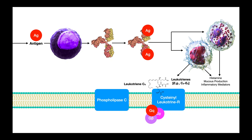Another thing that these cells — in particular the macrophages — produce are substances called leukotrienes. This is one of the three types of eicosanoids, the other two being thromboxanes and prostaglandins. However, leukotrienes, especially C4, D4, and E4, have an important role in the pathophysiology of asthma.